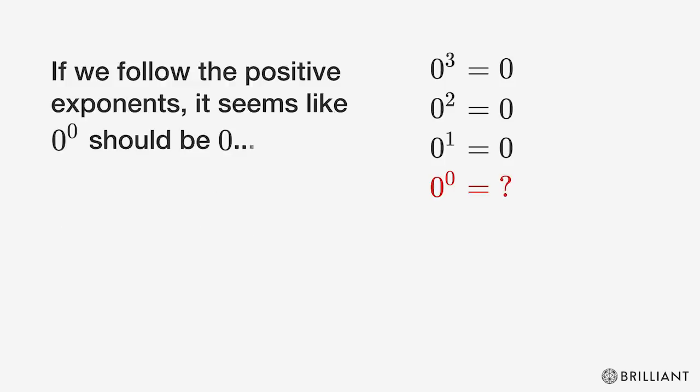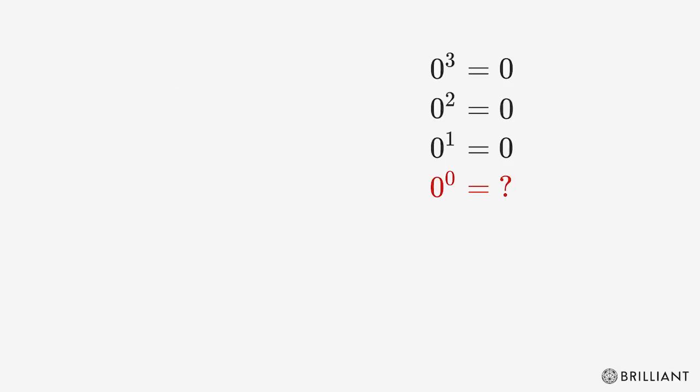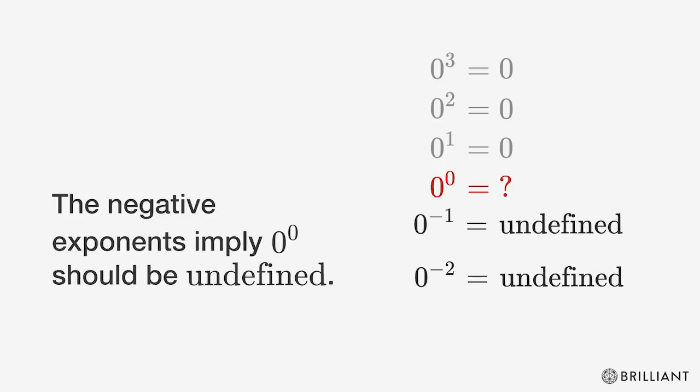If we follow the positive exponents, it seems like zero raised to the power of zero should be zero. But zero to the negative first power is one over zero, which is undefined, and same with zero to the negative two power. But the negative exponents imply zero raised to the power of zero should be undefined.